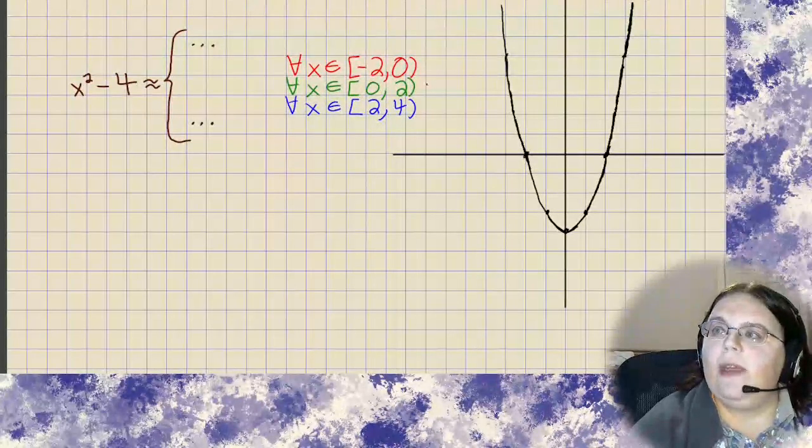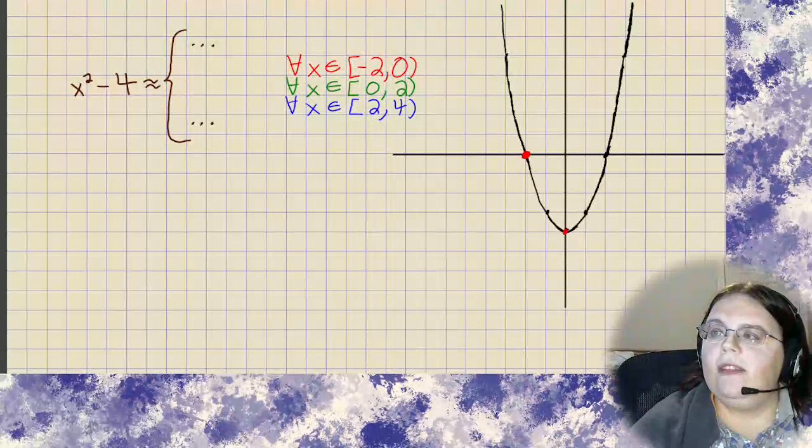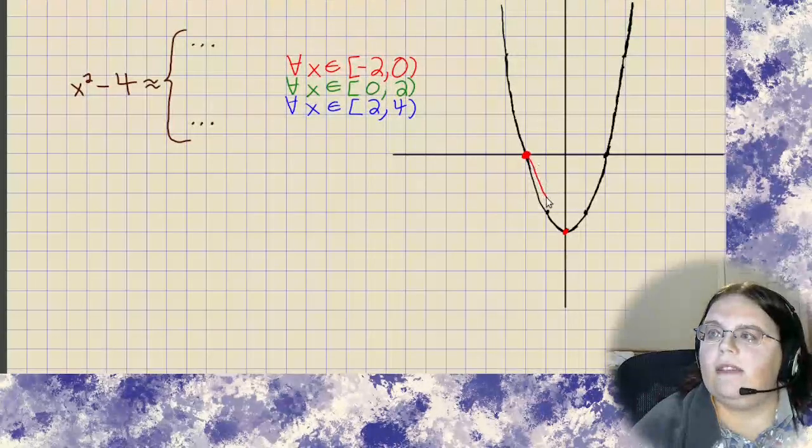So starting with from negative 2 to 0, the idea is I'll be looking at going from that point to that point and drawing a line between them, approximately this line.